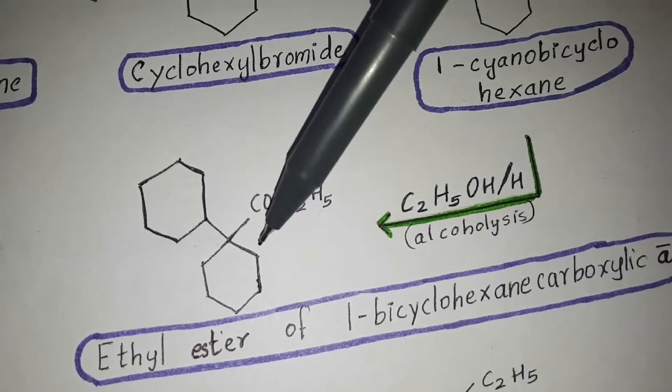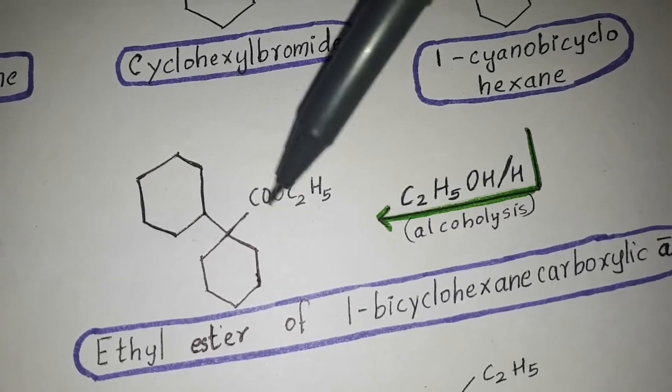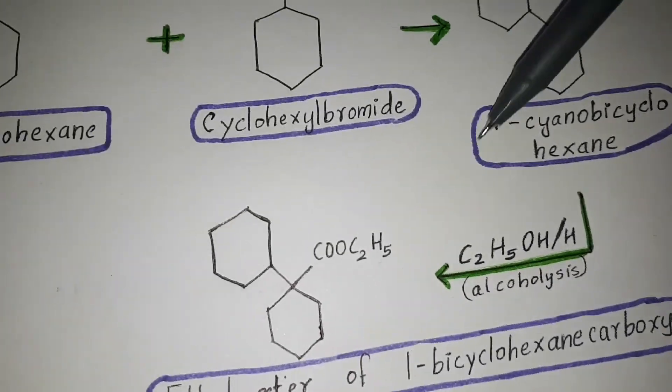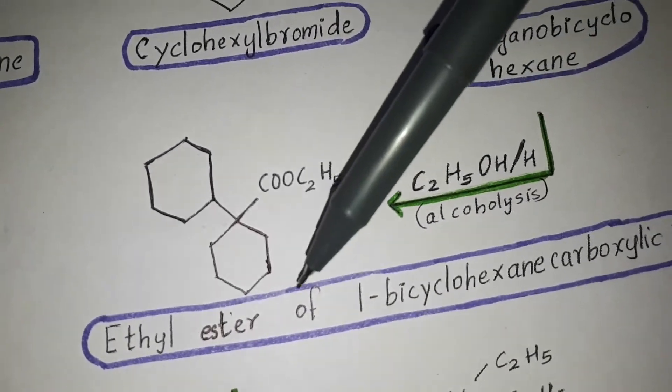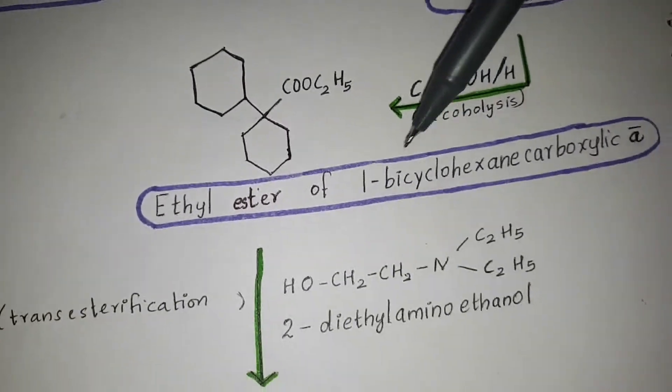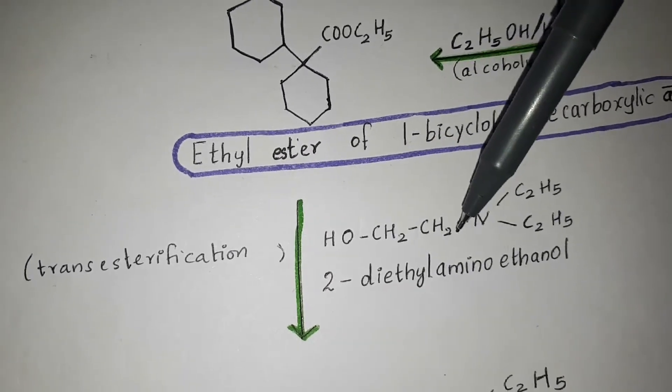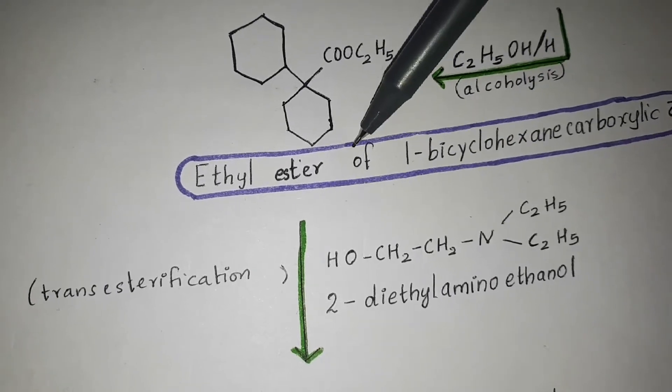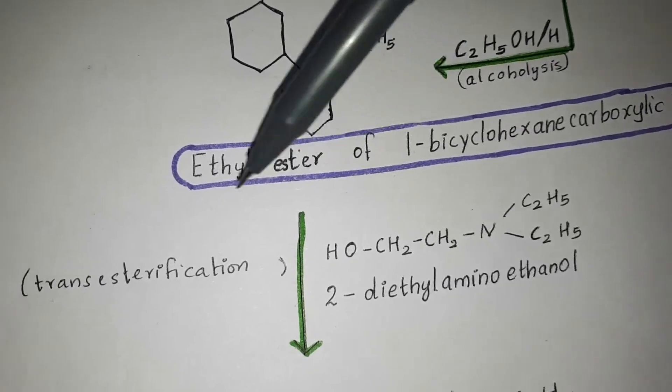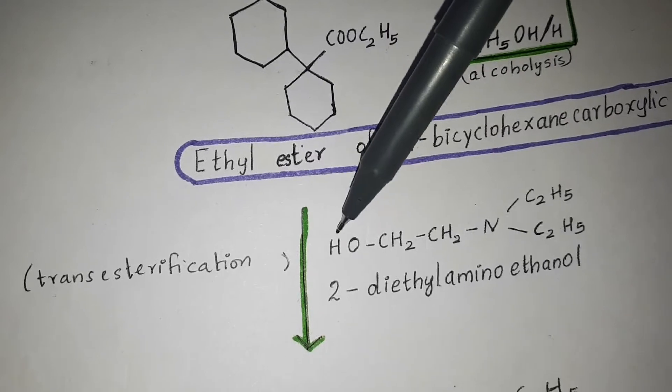This compound undergoes alcoholysis to form this. Now 2-diethylaminoethanol reacts with this, and the process is called transesterification.